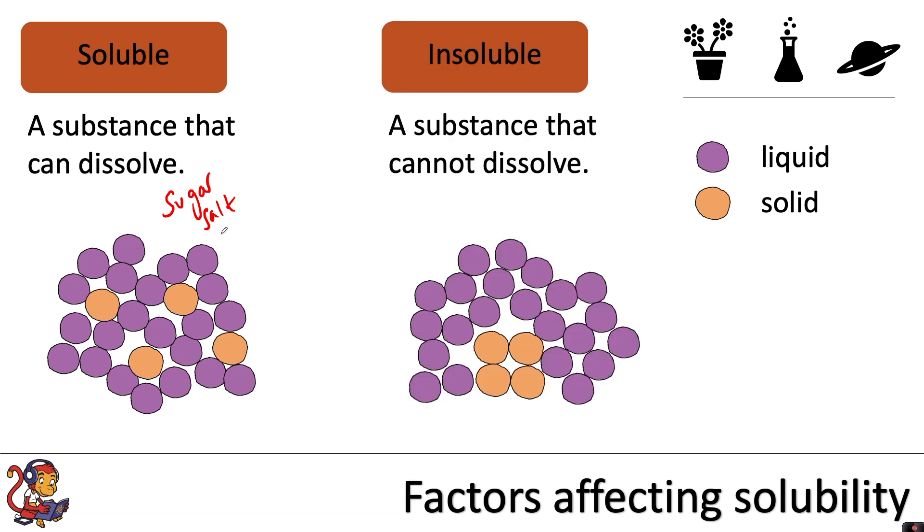Insoluble describes a substance that cannot dissolve. An example of this might be sand for example. And you'd notice the difference because the soluble substances could make a solution and if you dissolved them in the solvent you would not be able to see that substance anymore. Whereas an insoluble substance would just sit at the bottom of the beaker and it would not dissolve into the liquid around it.